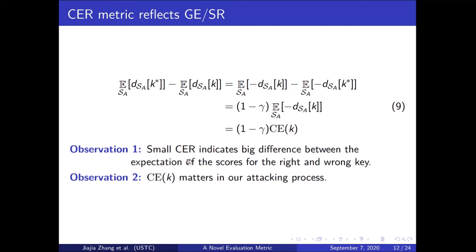Apart from the proposition, we also have observations showing why cross-entropy ratio is a good side-channel metric. According to equation 9, with a smaller cross-entropy ratio, the difference between the expectations of the scores for the right and wrong keys gets bigger. This means it is easier to retrieve the right key, so the attacker may need fewer traces to mount a successful attack, or with the same amount of traces, may achieve lower guessing entropy and higher success rate. Equation 9 also implies that the right key and wrong keys will be more distinguishable with larger cross entropy for the wrong key, which verifies that the definition of cross-entropy ratio is reasonable.